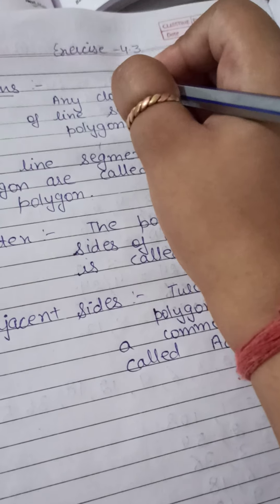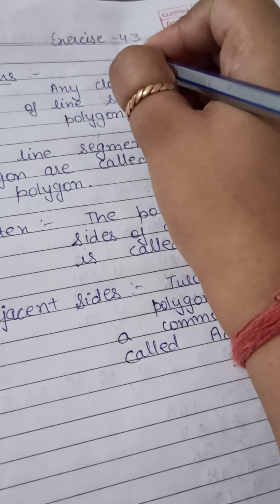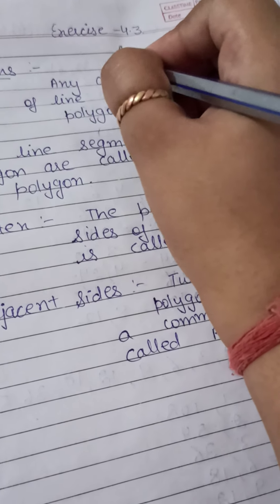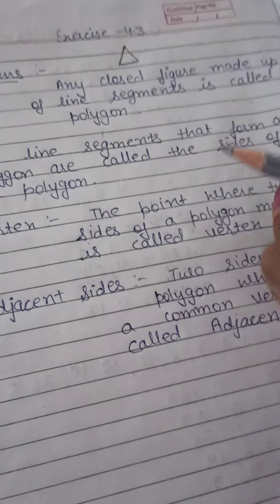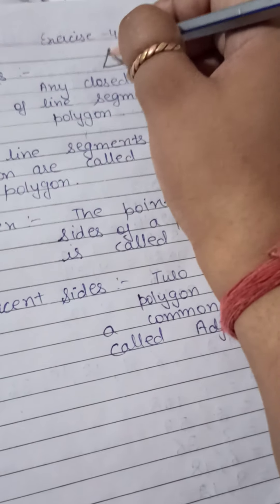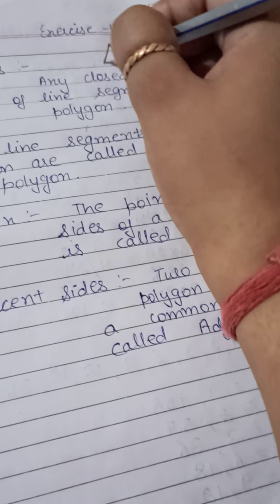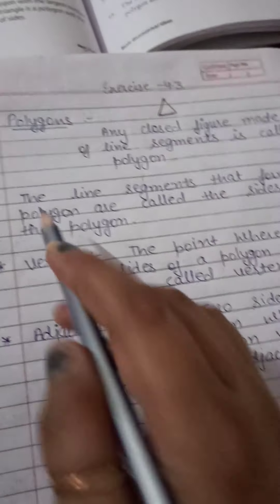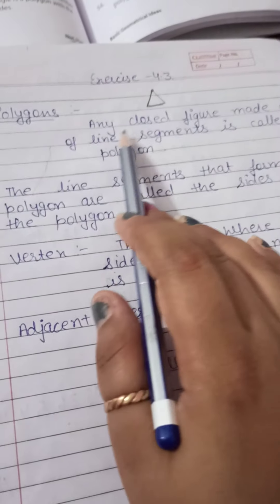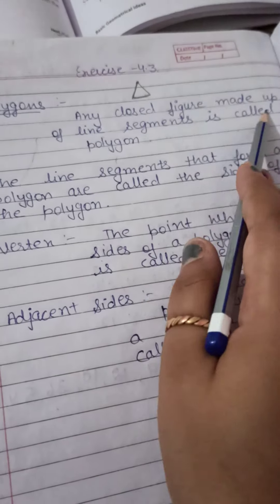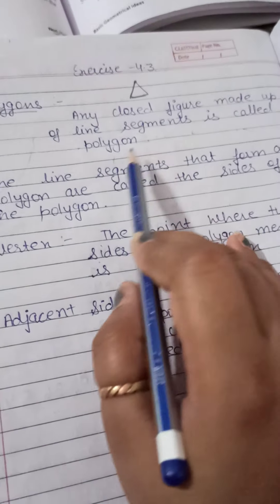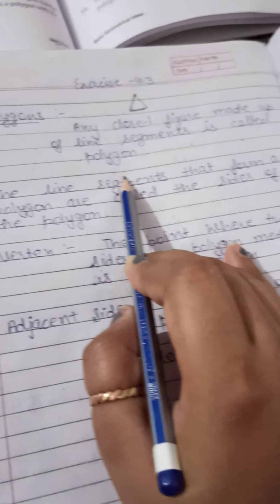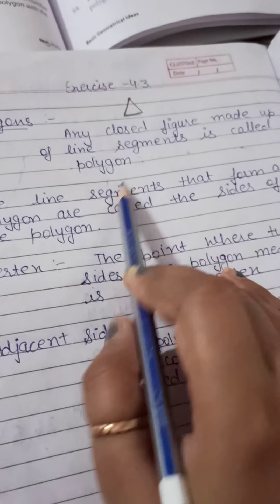Like this — your triangle is one example. It is closed and made with line segments. Polygons are any closed figure made up of line segments — that is called a polygon.